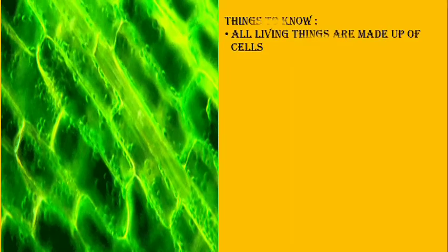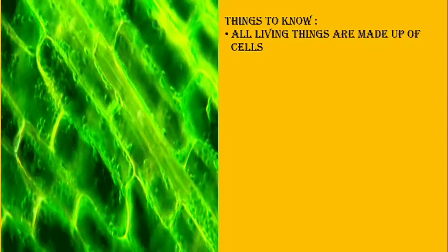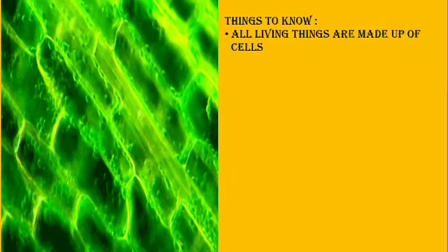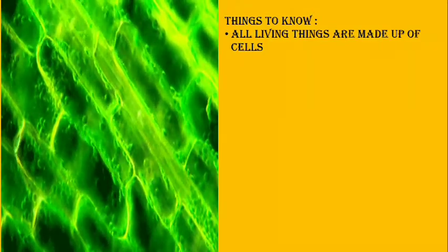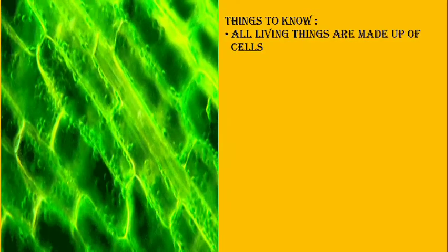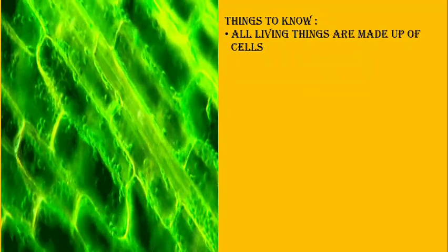In Lesson 3, you learned about the difference between prokaryotic and eukaryotic cells according to their distinguishing features. There are certain characteristics that living things exhibit — the characteristics of life. Living things are made up of cells. They metabolize, grow, develop, respond to stimulus, adapt to their environment, and reproduce.